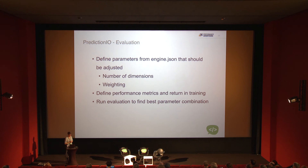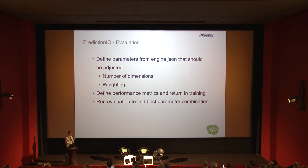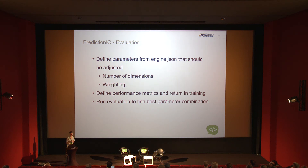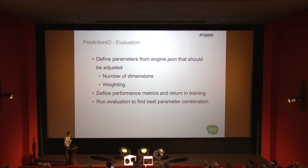The last part of the stack is evaluation. You define performance metrics in your code — accuracy, number of hits, whatever suits your use case — and evaluation plays around with the parameters in your engine.json. It might reduce dimensions to 300 while increasing weighting. You tell it to run for a couple of hours and it finds the best combination of parameters, which is very powerful for fine-tuning your engine.